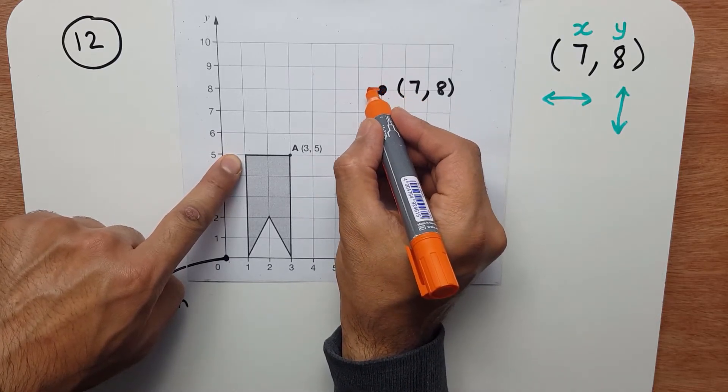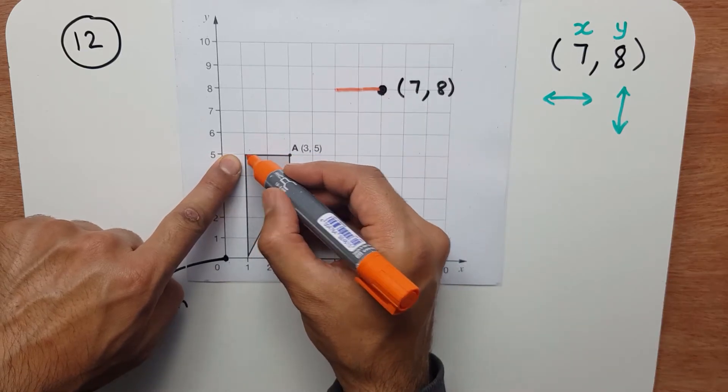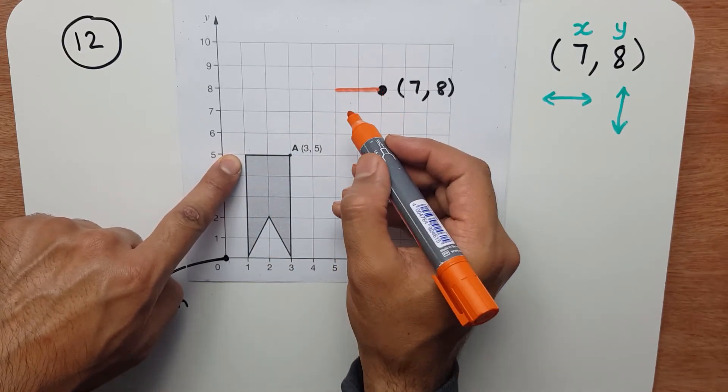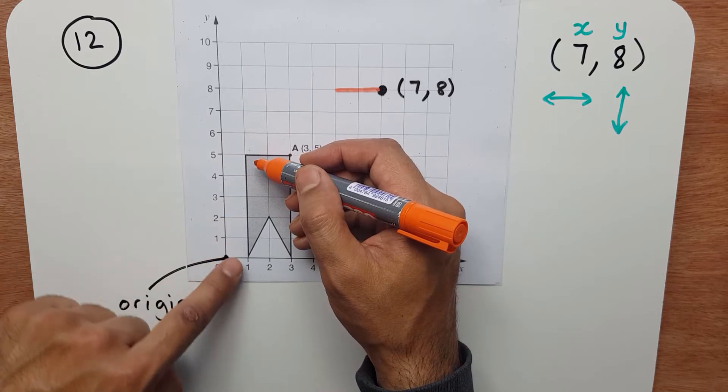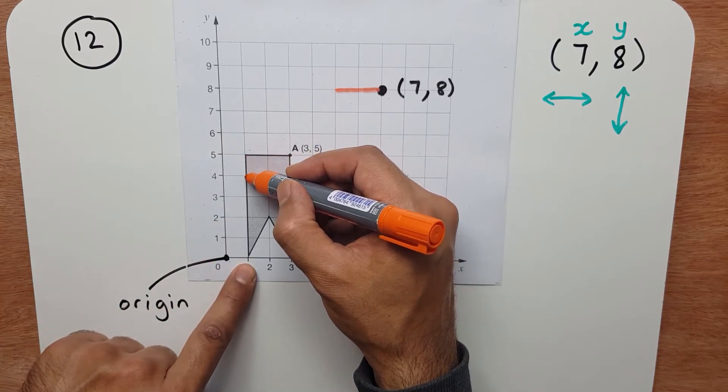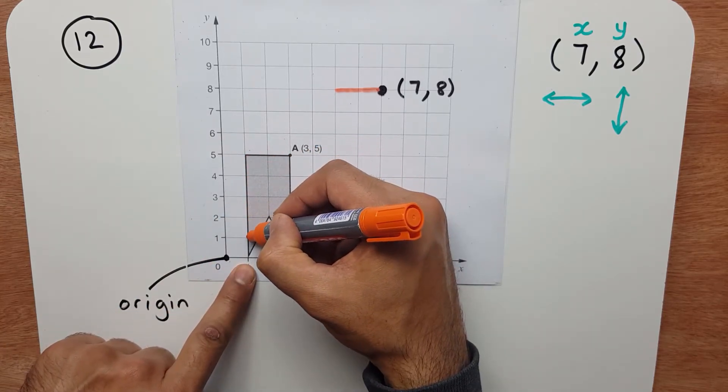So let me go back. 1, 2. Now I've got this corner here. Now what I need to do is, how do I find this? I go down 1, 2, 3, 4, 5.